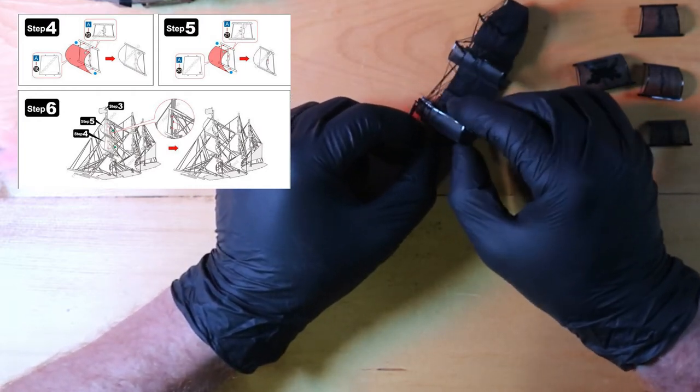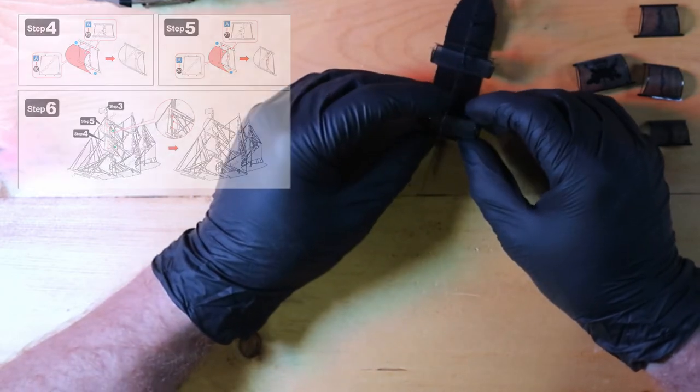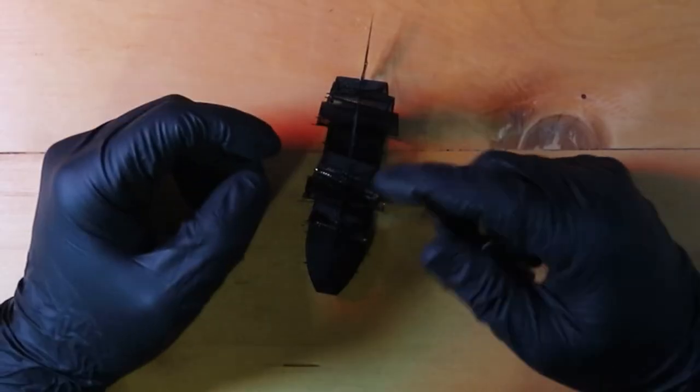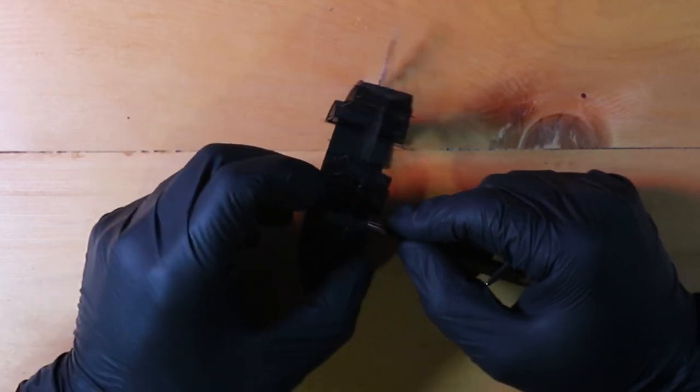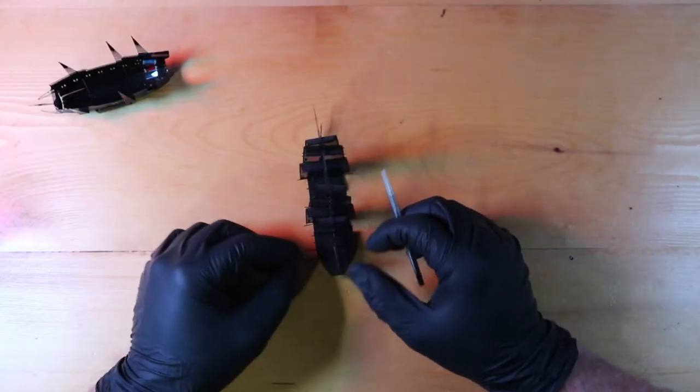Using multiple tweezers here can be helpful. You don't want to bend this massive piece. Let's get these little twists in. And there we go. All of our sails attached.